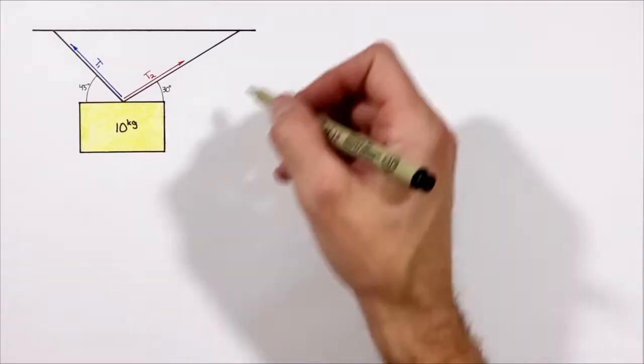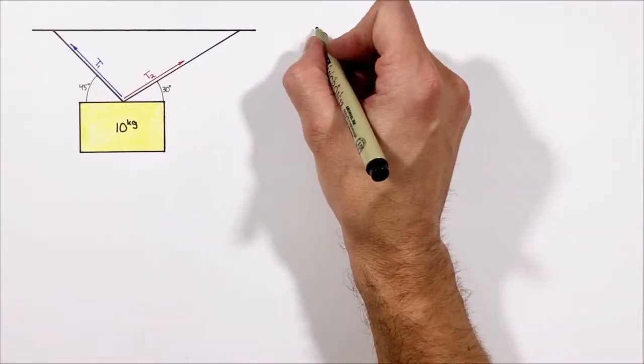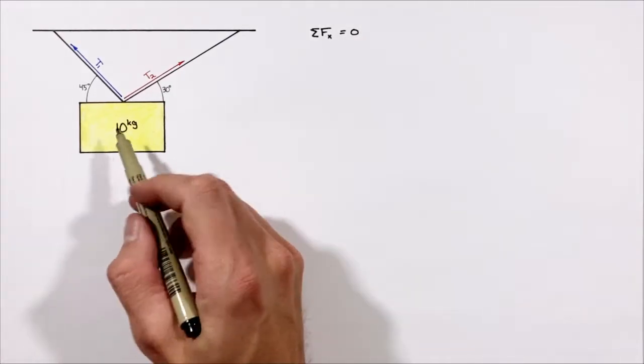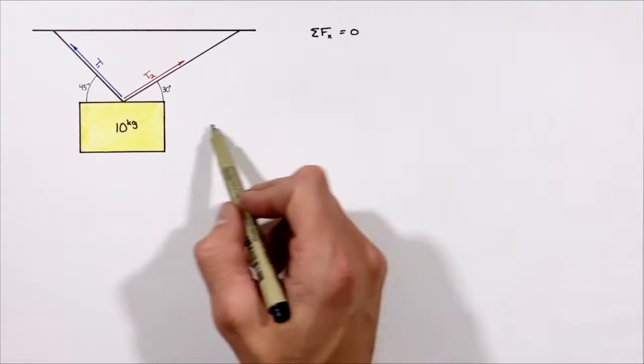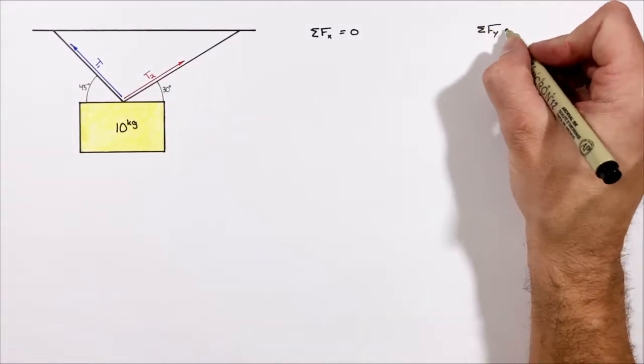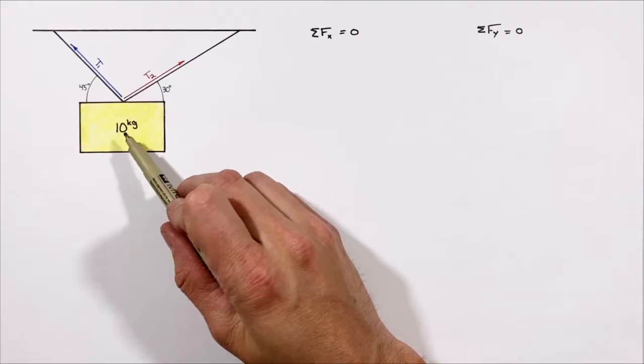If we take a look at Newton's second law in the x-axis, we know the net force is going to be zero. That is to say, there is no acceleration of the block horizontally, and we see a similar situation in the y-axis.